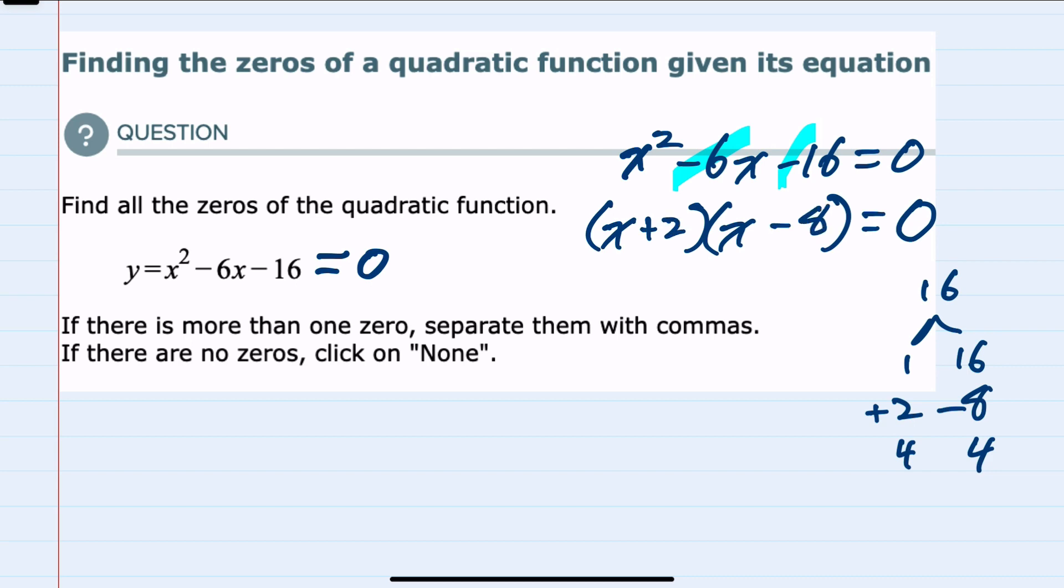Now that we factored and we have two factors being multiplied with the result being zero, I know that either that first factor, x plus 2, could be zero, or the second factor, x minus 8, could be zero. Since this is multiplication, if either of those two factors were zero, multiplying would give us zero.